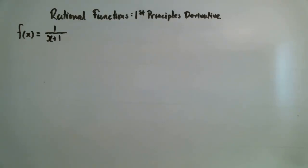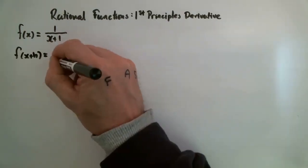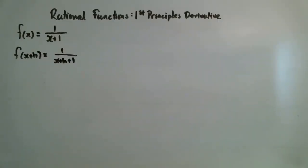We're going to do a first principles derivative of a rational function. Get your fraction hats on everybody because this is going to get very fractional in just a minute. Let's find out what f(x+h) is. I've just substituted x+h everywhere I see an x. Now I'm going to put this into my difference quotient and take the limit as h goes to zero.